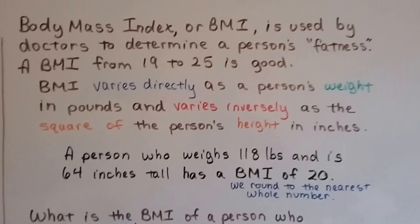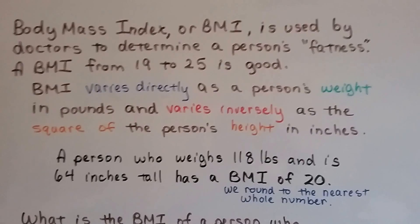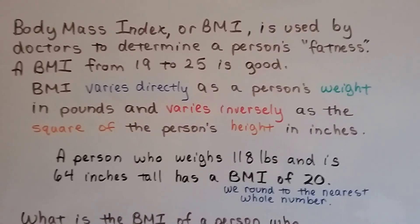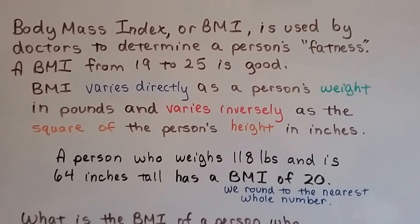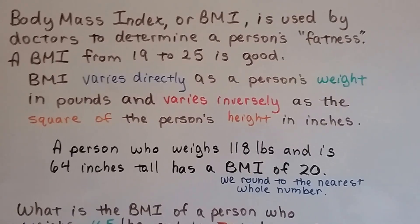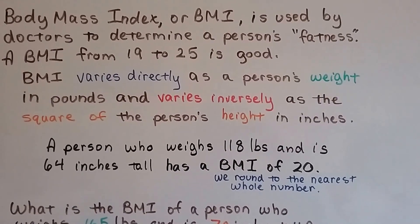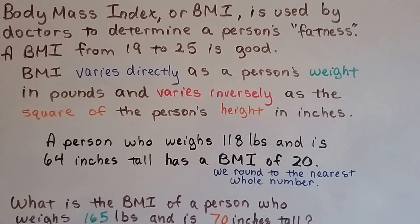This one's going to be a little bit more fun and you're going to be able to do this yourself. Body mass index, BMI, is used by doctors to determine a person's fatness or thinness. A BMI from 19 to 25 is considered healthy. BMI varies directly as a person's weight in pounds and varies inversely as the square of the person's height in inches.